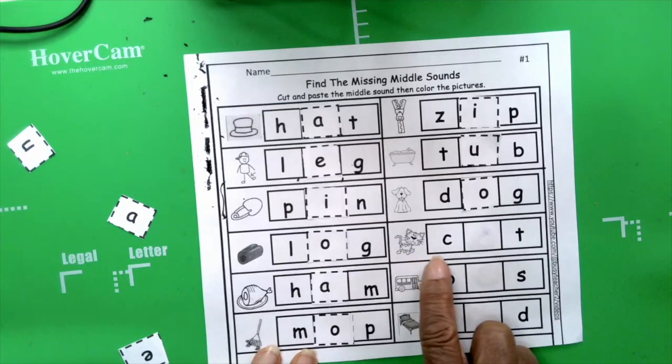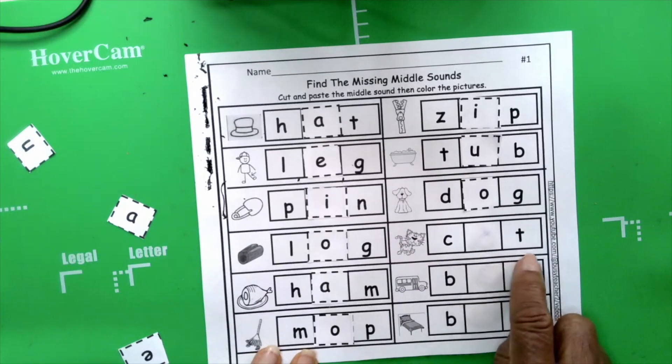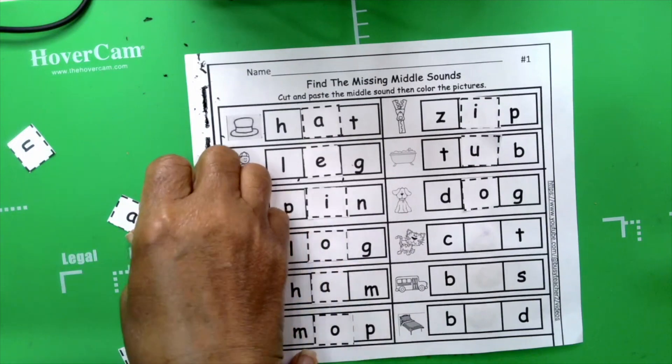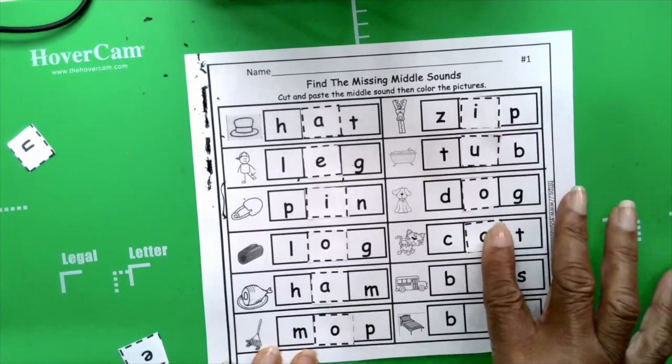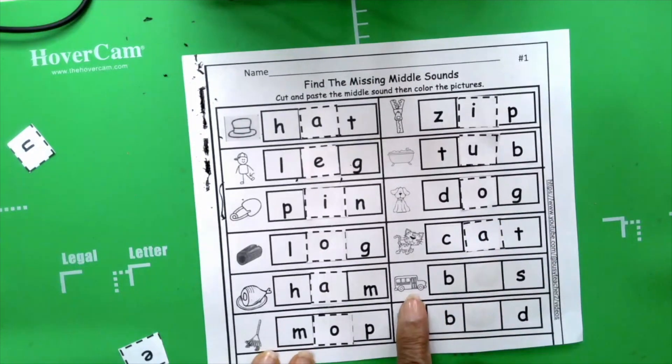Cat, c, ah, t, cat, I can hear everyone saying A, A, you're right, it's A, we know what that is.